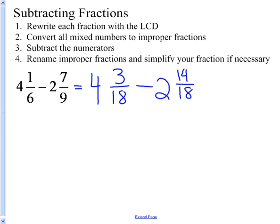Now rather than borrow here, what I'm going to do is I'm going to change each of these mixed numbers to improper fractions. So 18 times 4 is 72, plus 3 is 75 over 18.